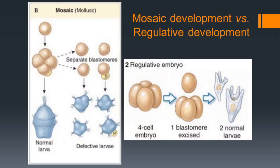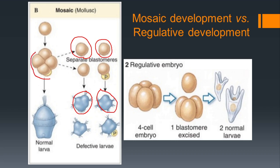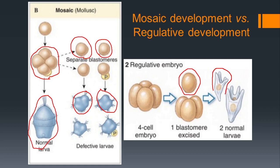In comparing mosaic and regulative development: in mosaic development, the fate of every blastomere is predetermined and if blastomeres are separated they give rise to defective embryos. Only an embryo with all blastomeres can give rise to a complete normal larva. In regulative development, the fate of blastomeres is not predetermined, so if separated they can each give rise to a complete normal embryo because development can be reorganized.